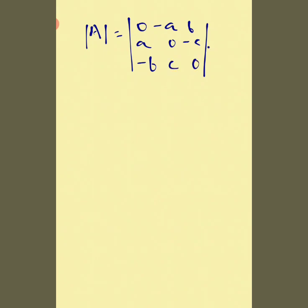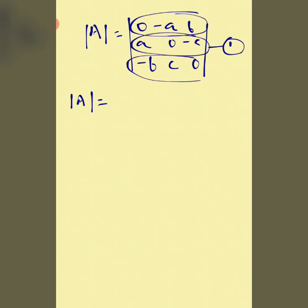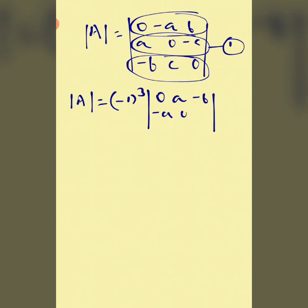There is another way to solve these questions. I am taking minus one common from all the rows. You can take minus 1 from each row. After taking minus 1 common from all three rows, the matrix that remains inside the determinant becomes the transpose of the original.